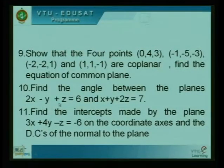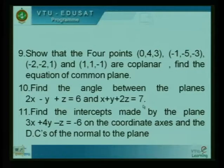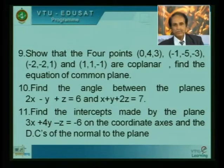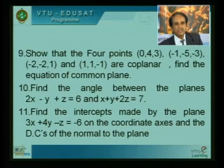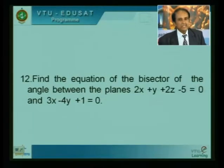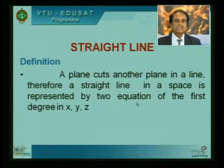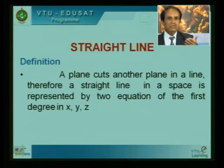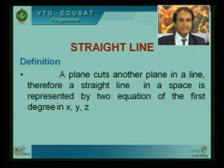For the angle between two planes — for example 2x − y + z = 6 and x + y + 2z = 7 — the formula is cos θ = (a₁a₂ + b₁b₂ + c₁c₂) / (√(a₁² + b₁² + c₁²) · √(a₂² + b₂² + c₂²)). With this, the chapter on equation of the plane and related problems is covered.